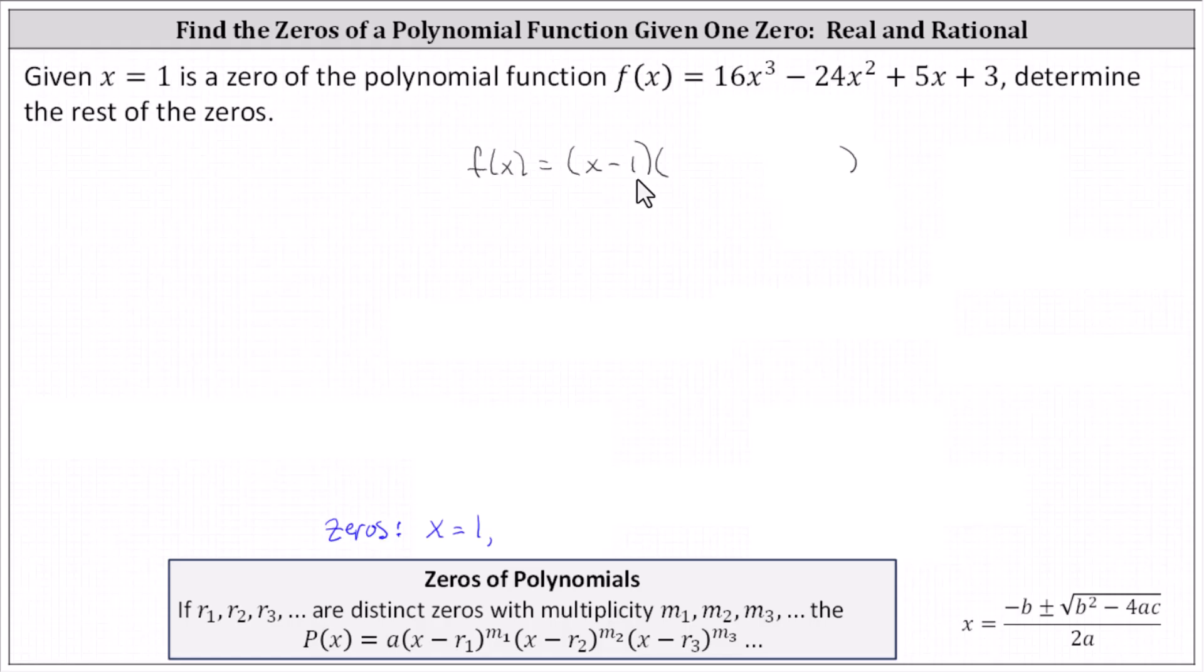Let's do this using synthetic division. Recall to perform synthetic division, we use the zero of one. And then we list the coefficients, which are 16, negative 24, five, and the constant is three. And just as a reminder, if x minus one is a factor, we should get a remainder of zero when performing synthetic division.